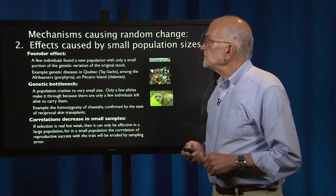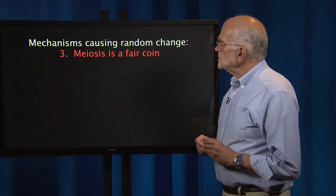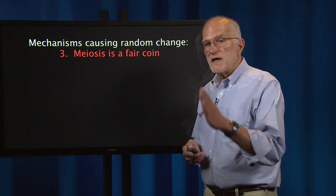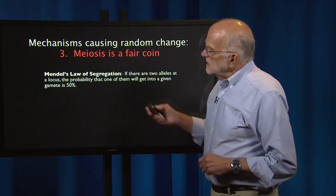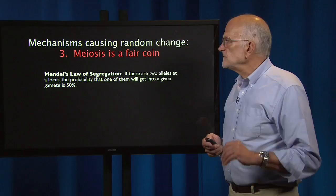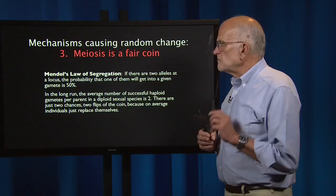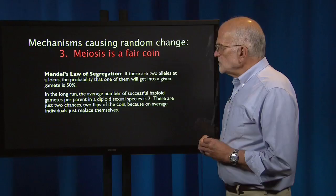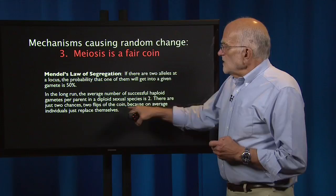The third mechanism causing random change is the fact that meiosis is a fair coin — a result probably of evolution designing meiosis to be absolutely fair about which allele gets into which gamete. This is expressed in Mendel's law of segregation: if there are two alleles at a locus, the probability that one of them will get into a given gamete is exactly 50%. In the long run, the average number of successful haploid gametes per parent in a diploid sexual species is two, because populations are stable and organisms are just replacing themselves.